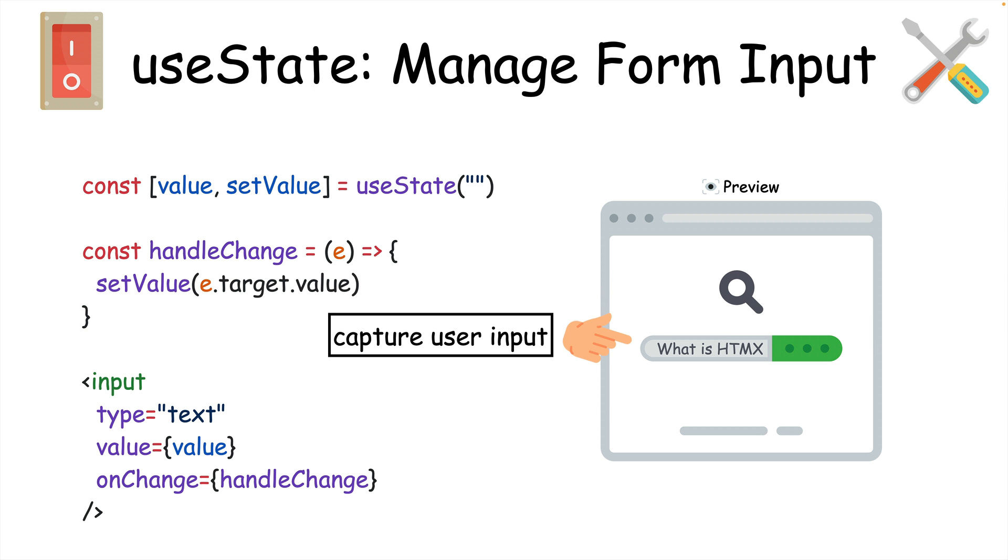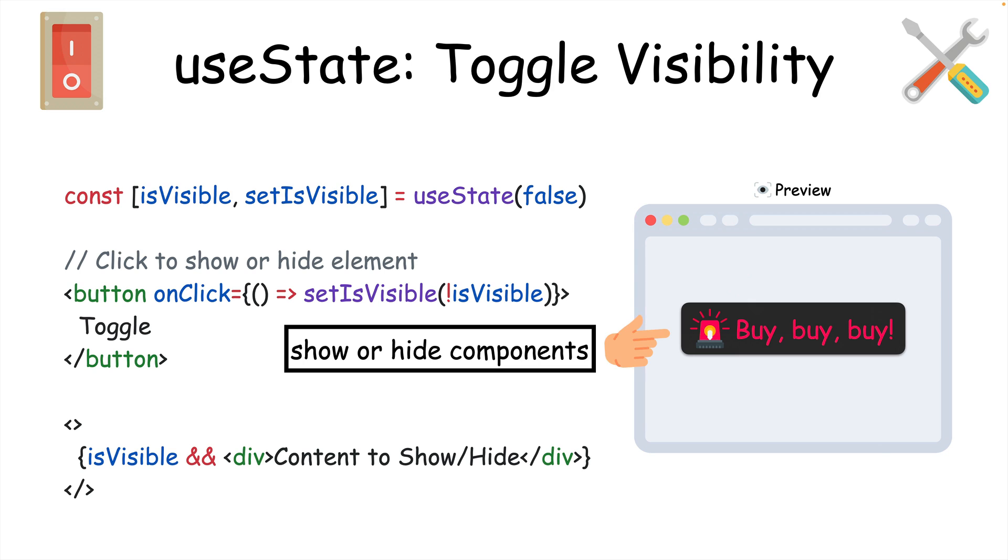useState is great for capturing user input in form fields like inputs, text areas, and selects. It can be used to show or hide components like modals, tooltips, or drop-downs when you give it a Boolean state value.